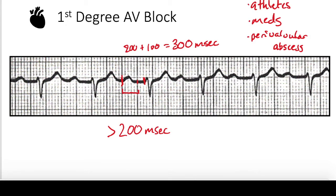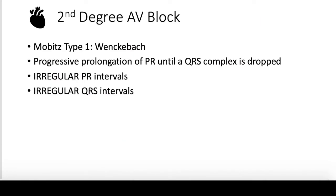Second degree AV blocks are ones people often confuse, but with a step-by-step approach they're easy to differentiate. Second degree type one — Wenckebach block — involves progressive prolongation of the PR interval until you have a dropped QRS complex. Importantly, both the PR intervals and the QRS intervals are irregular in type one.